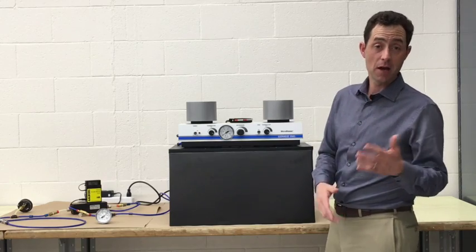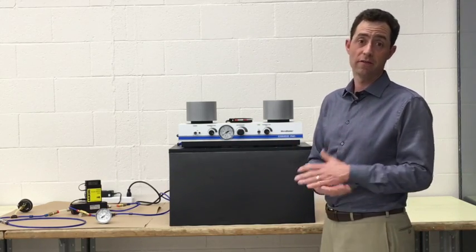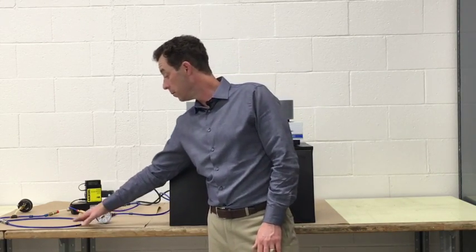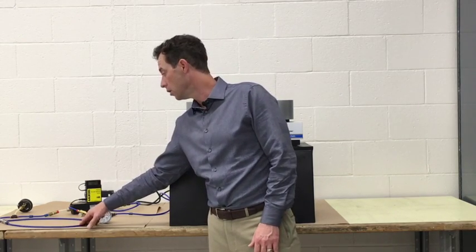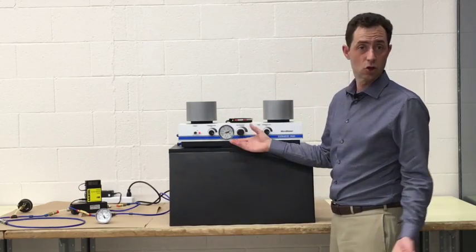A common mistake that can be made in blaster installation is not using a large enough air line. So to demonstrate that, we still have 100 psi for our shop air but this time we've used a smaller quarter inch abrasive hose to connect and you'll see that when the blaster is turned on